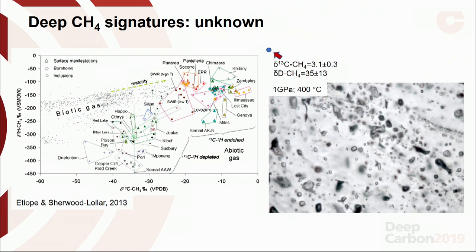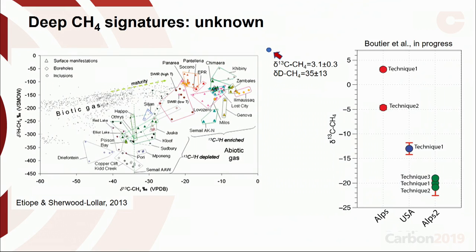We have done the same thing with other samples from different localities using different techniques — the Alps, and a very nice example from the US. You can see that there is a quite large range of δ¹³C signatures of this methane, and this probably reflects different sources and potentially different processes at depth.